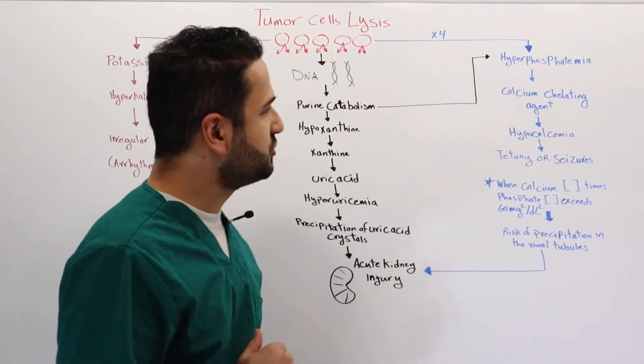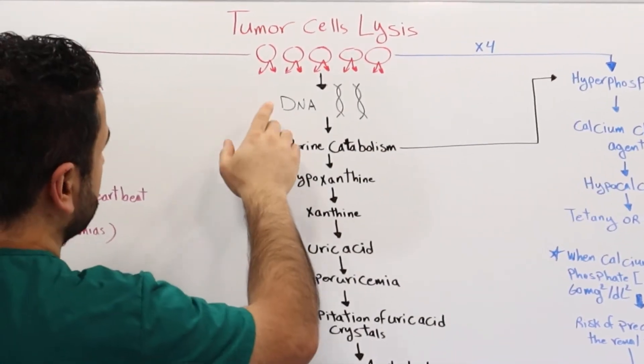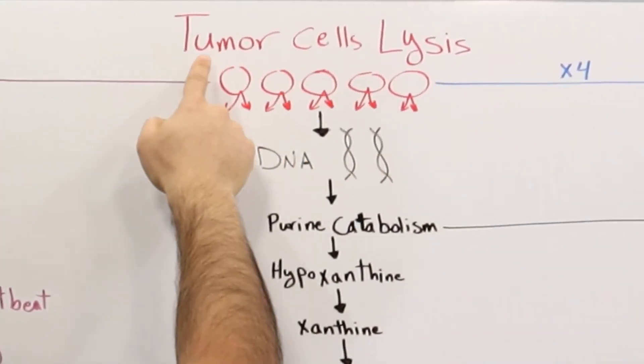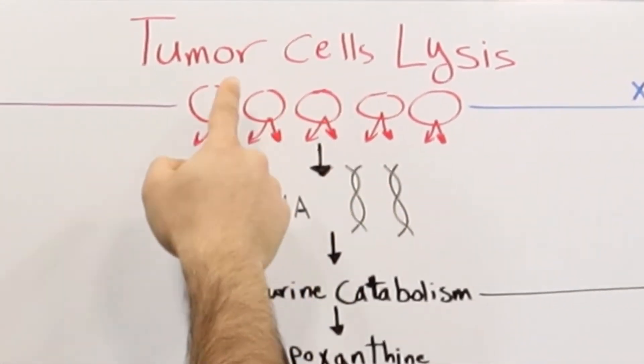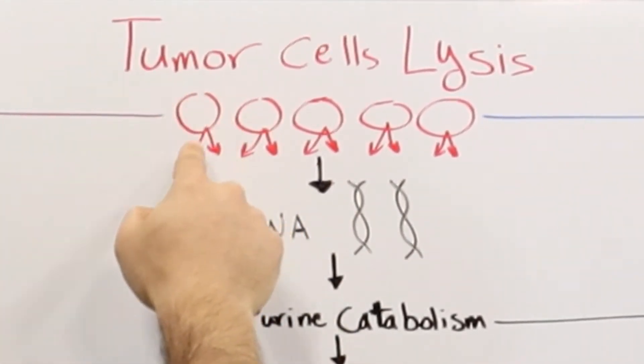In tumor lysis syndrome, it's in the name: tumor cells lysis, which means the tumor cells disintegrate through the breakdown of the membrane of these cells.